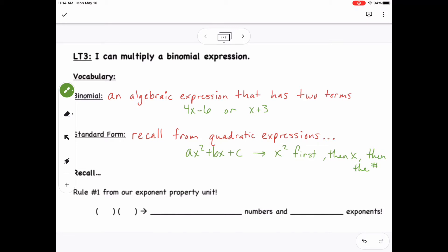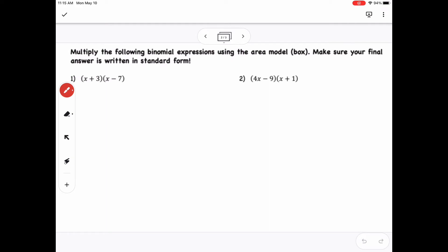Alright, so here we're going to be using rule number 1 from our exponent property unit. So when I have two parentheses, I'm going to multiply the numbers, and then anytime I have variables, I'm going to add the exponents.